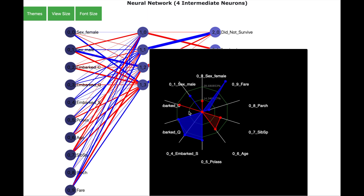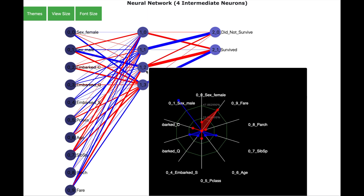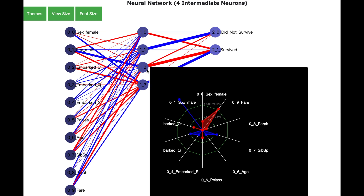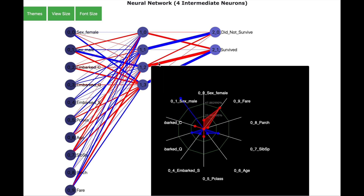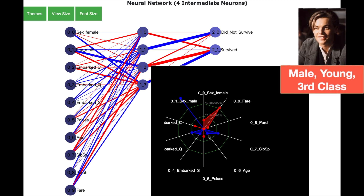Now let us look into neuron 12, which is sending a strong negative signal towards the neuron survived, which implies that the passenger did not survive. Looking inside the neuron, we see that this corresponds to passengers who were male, who did not pay a high fare, and who were also younger in age. So this reminds me of Jack from the film Titanic — let's say this is the Jack neuron.